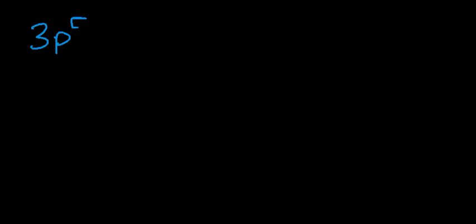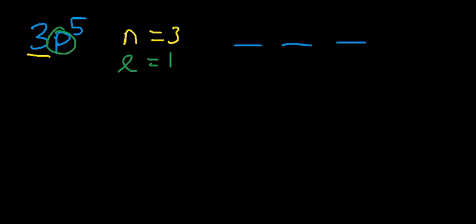Let's talk about how to identify these quantum numbers. Let's say you want to identify the four quantum numbers for the 3P5 electron. N is going to be this number — N is three. P will tell you what the value of L is. For S, L is zero; for P, L is one; for D, L is two; for F, L is three. P has three orbitals, and because L is one, ML is going to vary between negative one, zero, and one.